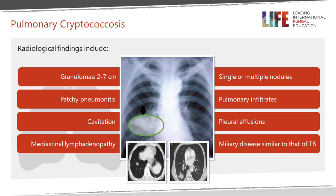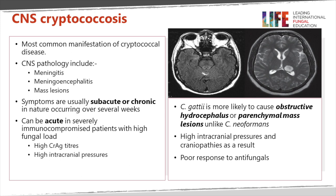These are the different radiological features in the lungs. Here is an example of an area of consolidation of the right mid zone, but you can get granulomas, you can get patchy pneumonitis, cavitation, mediastinal adenopathy, one or more nodules, and nondescript pulmonary infiltrates. Rarely it causes a pleural effusion, and occasionally you can get a miliary-like disease similar to TB. The nodule or large nodules is probably the most common manifestation, but the range is fairly broad.